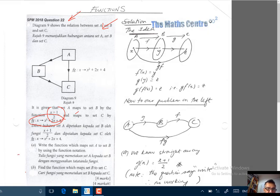In part A, we ask to write the function which maps set A to set B by using the function notation. And in part B, we ask to find the function which maps set B to set C.